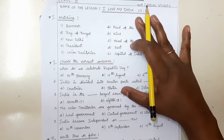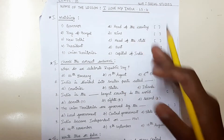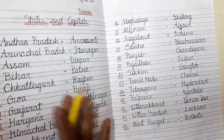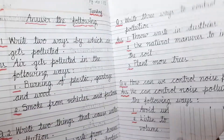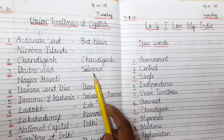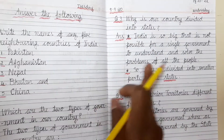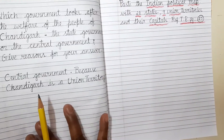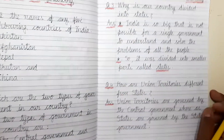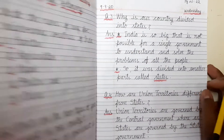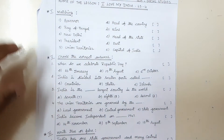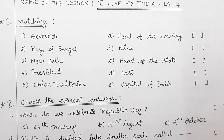We have to revise states and capitals, union territories and their capitals. Also revise lesson number four question and answers — questions one, two, three, and four are given. You have to revise these along with the worksheet.